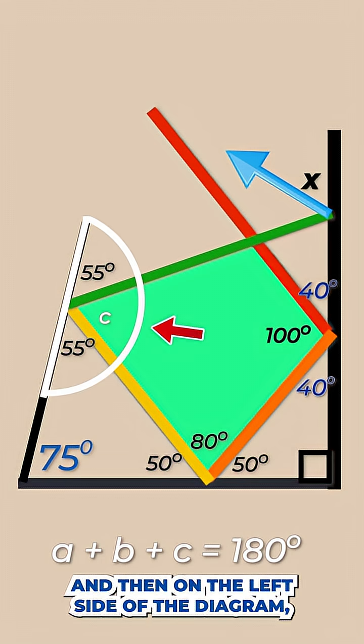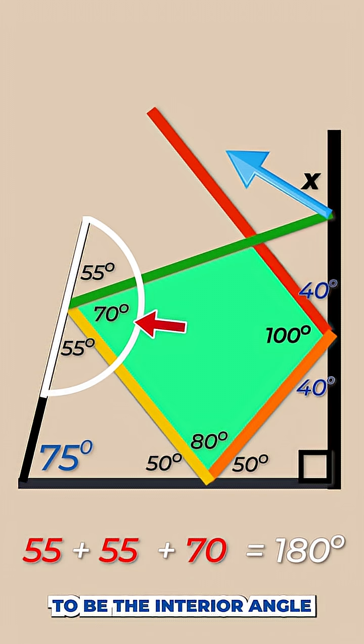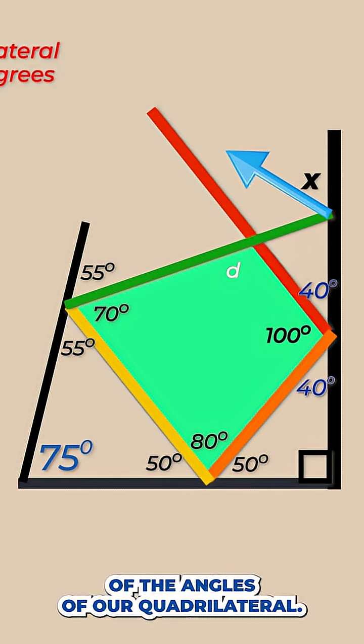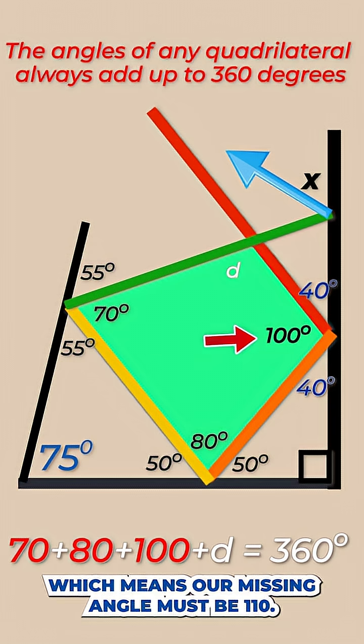And then on the left side of the diagram, we've got 2 55 degree angles, leaving a 70 degree angle to be the interior angle of our quadrilateral because we use the straight edge of the mirror is 180 degrees in total. Now we have three of the angles of our quadrilateral. And remember that quadrilaterals have a total of 360 degrees of angle interior, which means our missing angle must be 110.